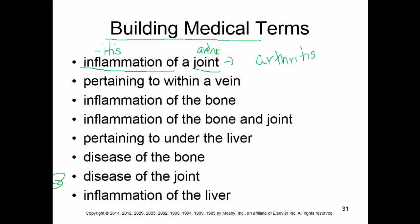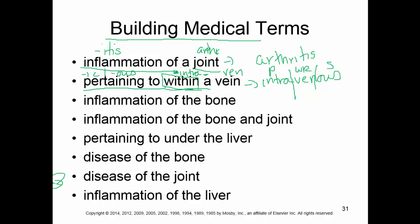If we do 'pertaining to within a vein,' we've got a couple of things. Pertaining to can be -ic or -us — this one is -us. Within is a prefix, and that's going to be 'intra.' So we've got a suffix, -us; a prefix, intra; and vein is our word root, which is -ven. We end up with 'intravenous.' You have your prefix, your word root, and your suffix.